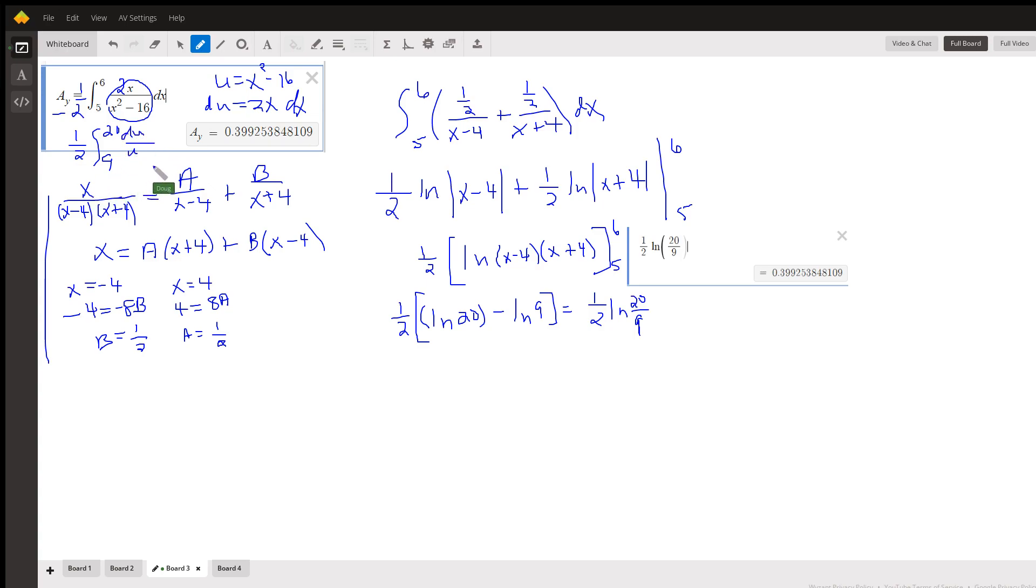We have u over, whoops, a du over u, so it's 1/2 ln of u evaluated from 20 to 9. Well, there's what you get right there. Okay, so you didn't need to use partial fraction decomposition on this. You could have just used u substitution. Partial fraction decomposition gives you the same answer.